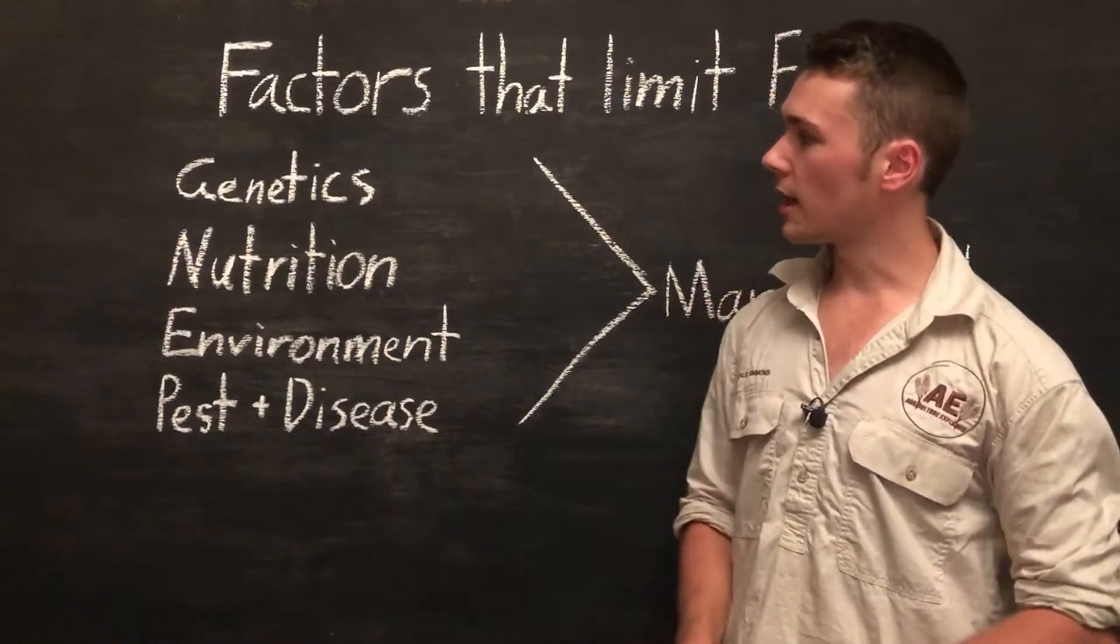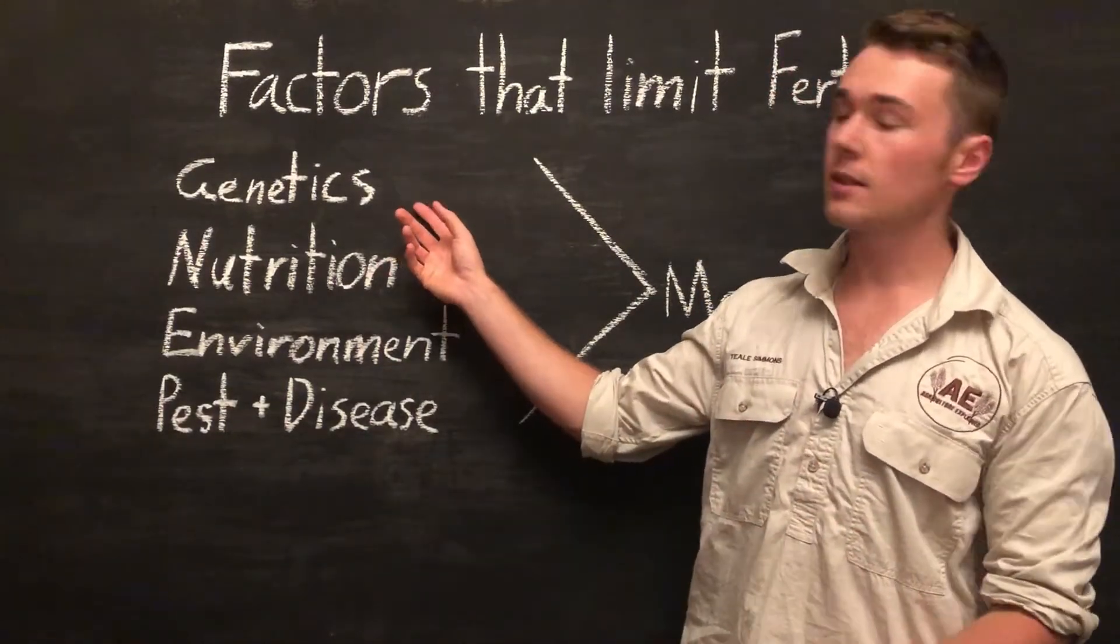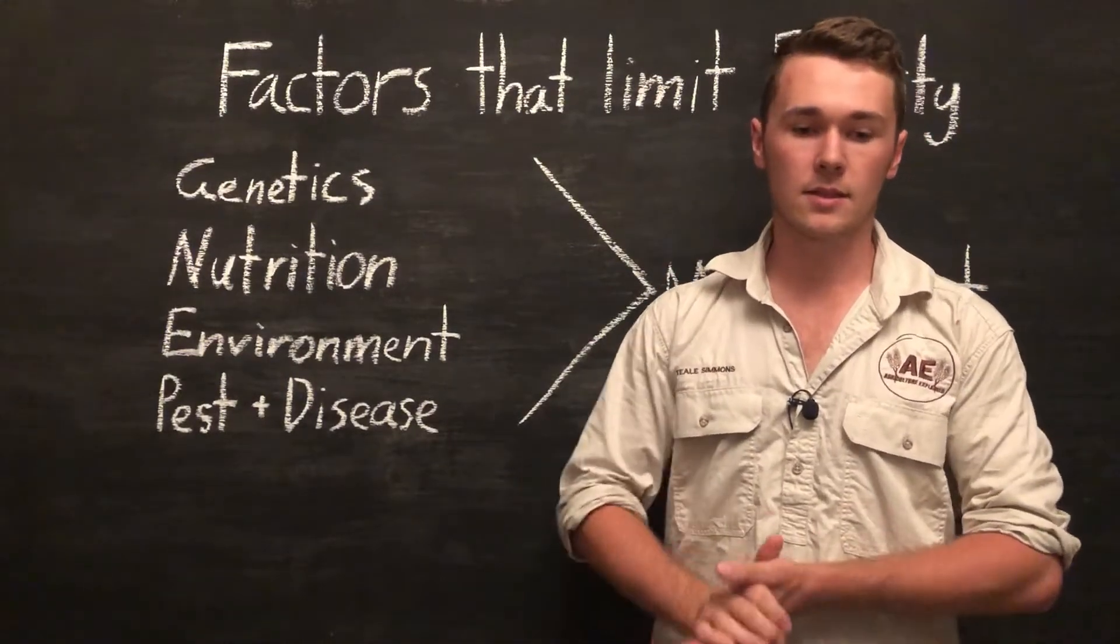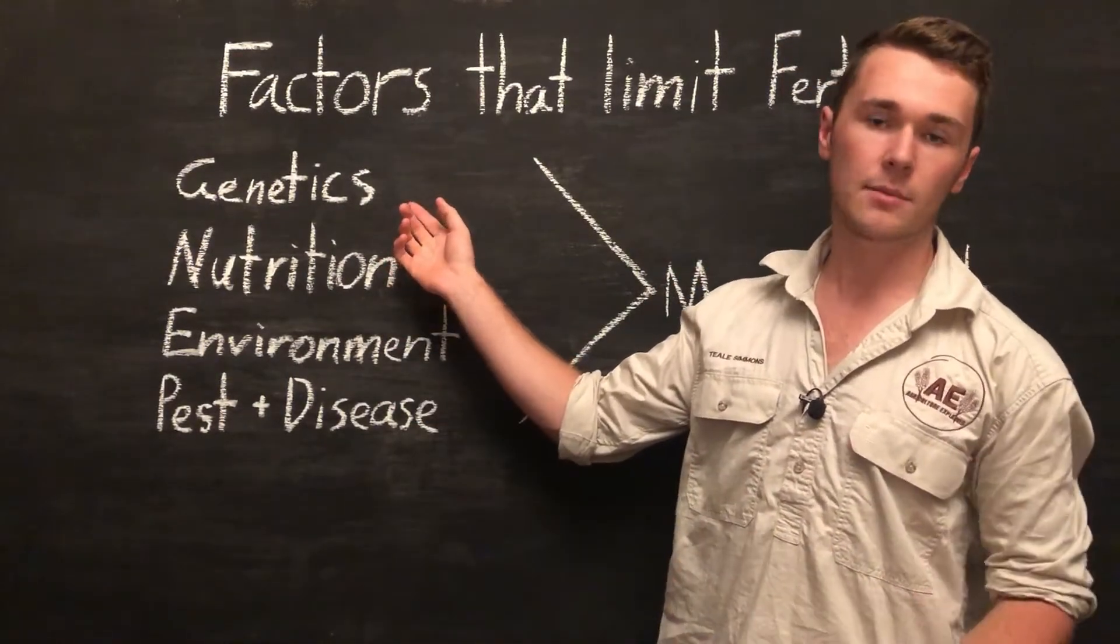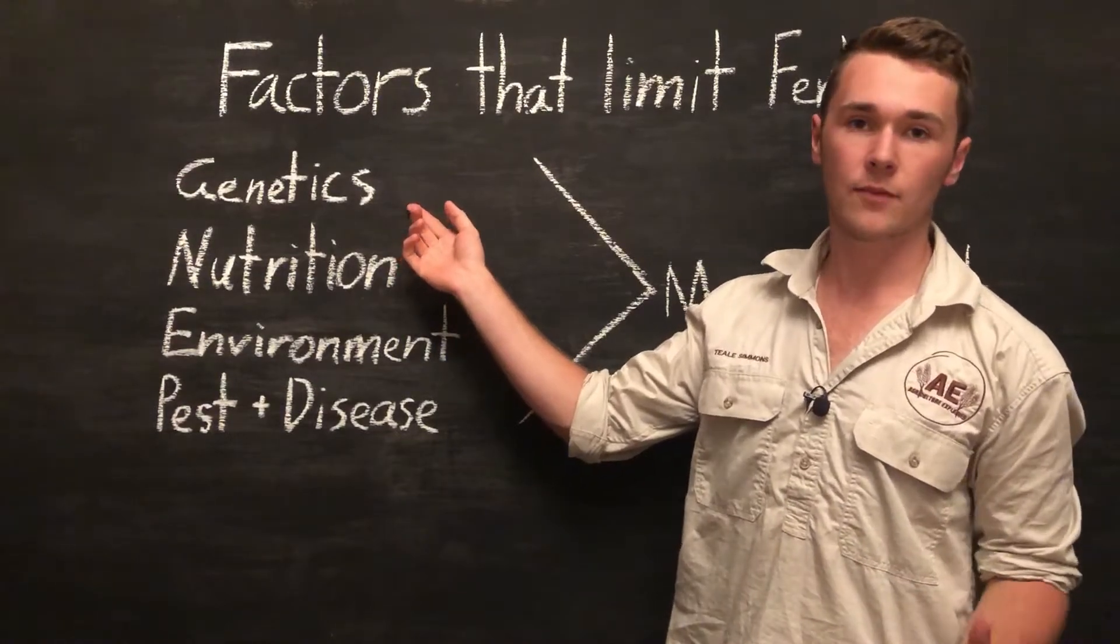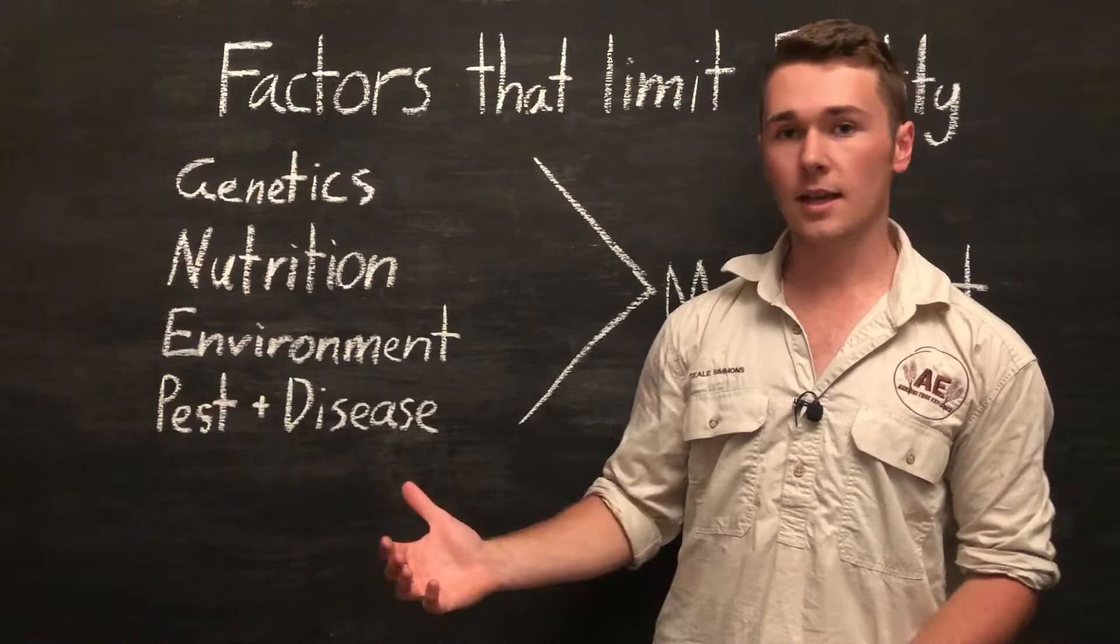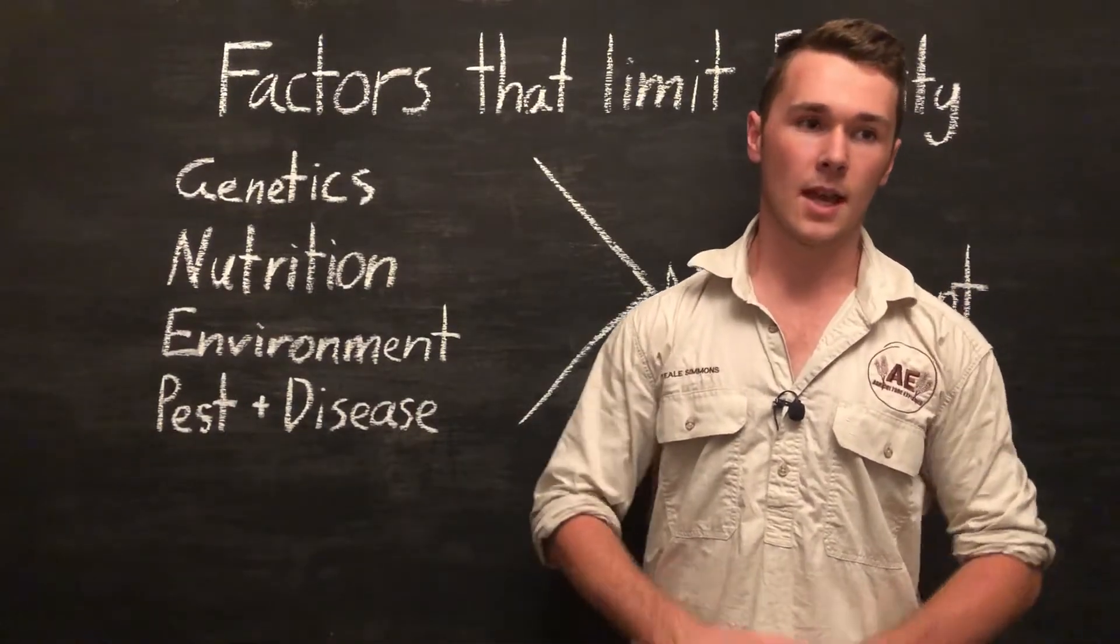So first we have genetics. Genetics can limit our fertility or increase our fertility. So there's three main ways this can occur: between animal types. For example, pigs can have very large litters, 10, 15, even 20, whereas cows only produce one calf a year.